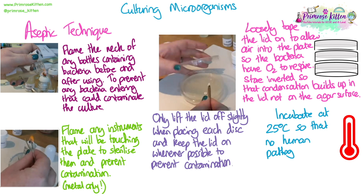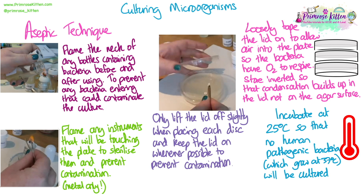We incubate our plates at 25 degrees so that no human pathogenic bacteria are grown. There's a chance of contamination through breathing or skin contact, but we must not heat above 25 degrees, because human bacteria grow at 37 degrees — body temperature — and could accidentally be cultured on your plate, which would be dangerous to release into the lab. All of these techniques are considered aseptic technique. You can be asked to give examples or justify why they ensure the practical goes smoothly — and nine times out of ten, the answer is that it prevents contamination: sterilizing, flaming, lifting the lid only slightly.